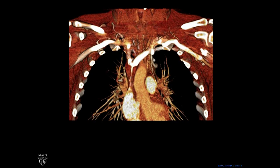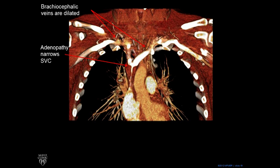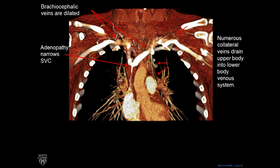We peel away to the CT scan, and you can see there's adenopathy — a mass encasing the superior vena cava. The brachiocephalic veins, which drain into the vena cava, are dilated. And there are numerous collateral veins draining the upper body into the lower body venous system. All these veins are abnormal — they're trying to bypass the SVC to drain the upper body into the lower body.